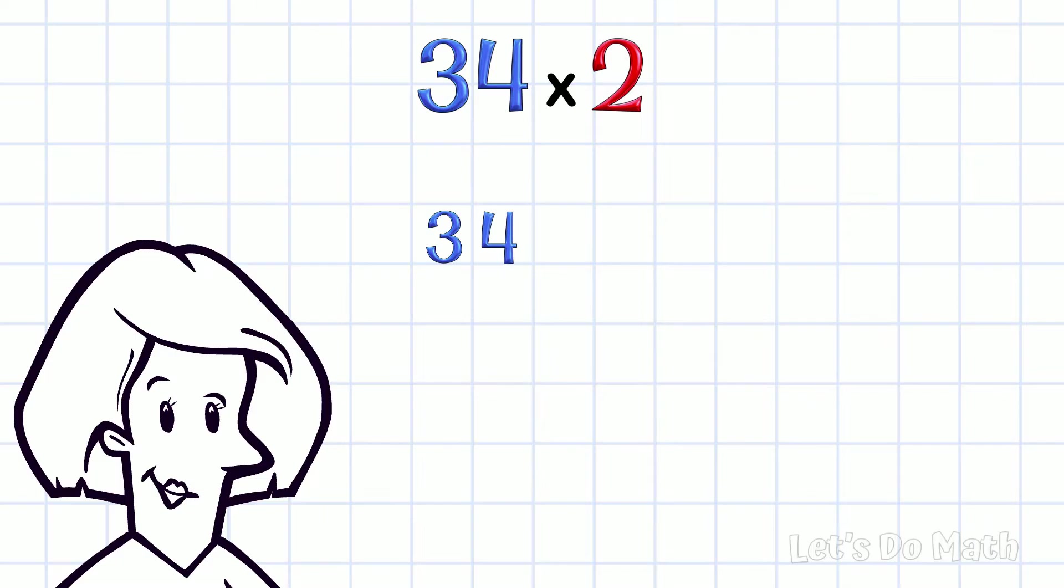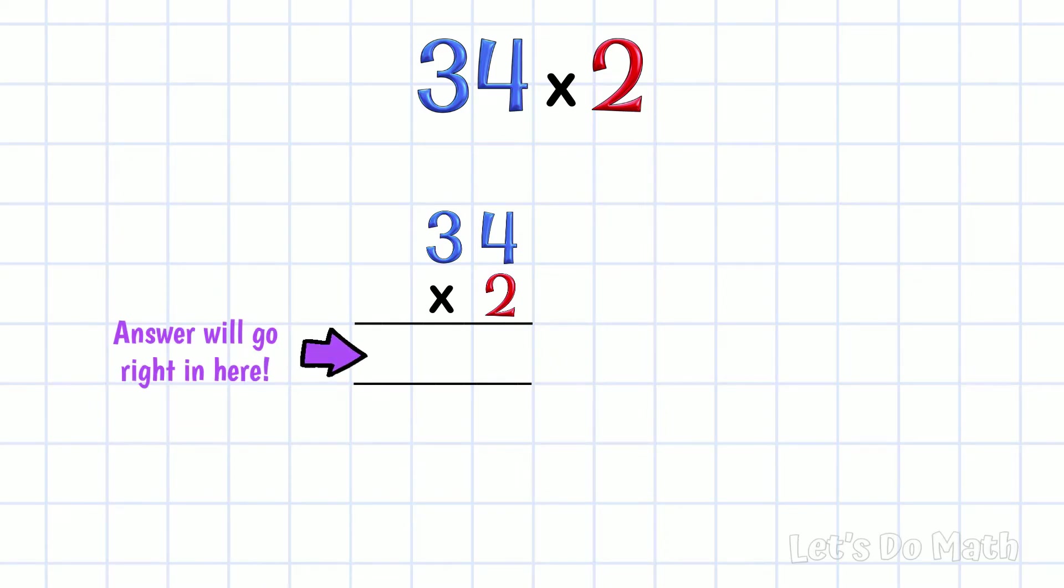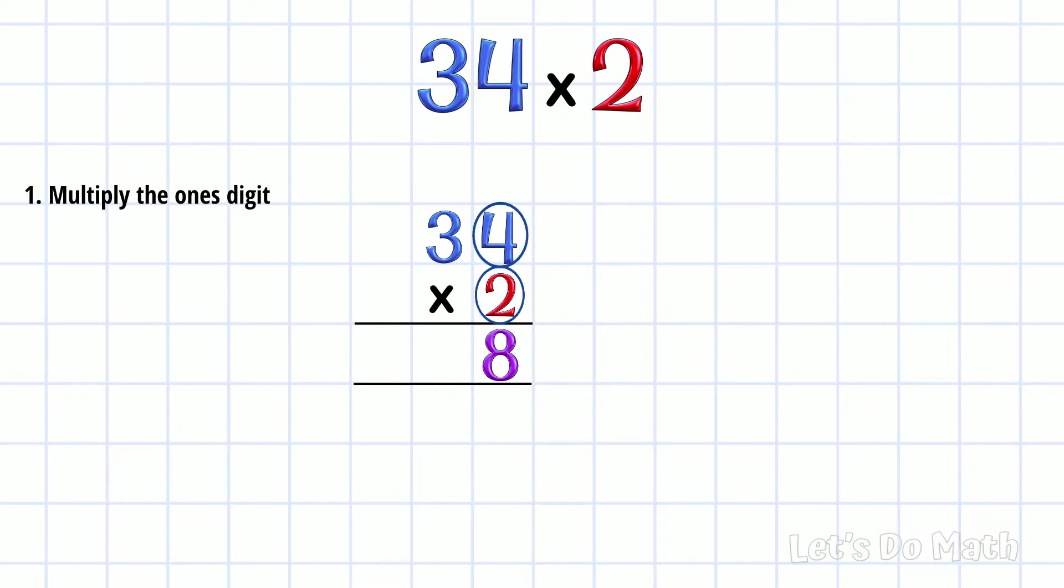The number we're multiplying first, times the multiplier on the next line down. Our answer will go right in here. First, we multiply the ones digit: 4 × 2, that's 8. Now we multiply the tens digit: 3 × 2 is 6. 34 × 2 is 68.